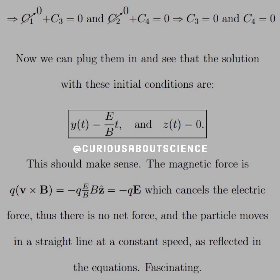Now all we have to do is plug those back into the original prototype of the equations of the general solution, and we see that we are left with y of t is equal to e over b times t, and z of t is equal to 0.